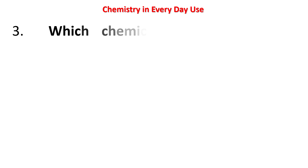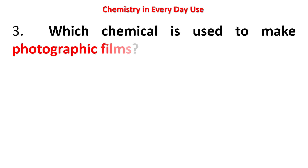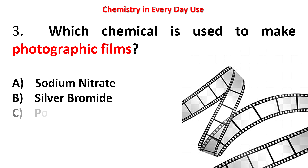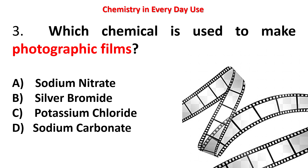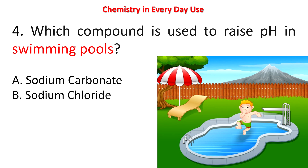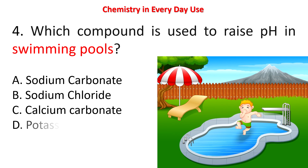Next question: which chemical is used to make photographic films? Options: sodium nitrate, silver bromide, potassium chloride, sodium carbonate. The answer is silver bromide. Next question: which compound is used to raise pH in swimming pools? Options: sodium carbonate, sodium chloride, calcium carbonate, potassium nitrate. The answer is sodium carbonate.